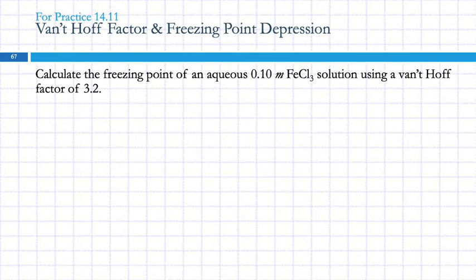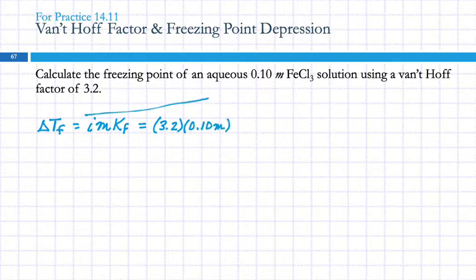Let's calculate the freezing point of an aqueous 0.10 molal FeCl3 solution using a Van't Hoff factor of 3.2. They're giving it to us here. The equation for freezing point depression: Van't Hoff factor times molality times the freezing point depression constant. They gave us the Van't Hoff factor 3.2, and the molality is 0.10 molal. The freezing point depression constant for water is 1.86. That's not something you would memorize, you would just look that up.